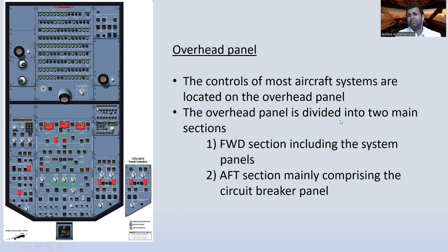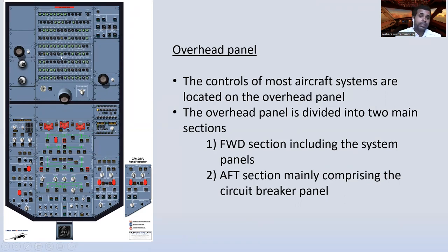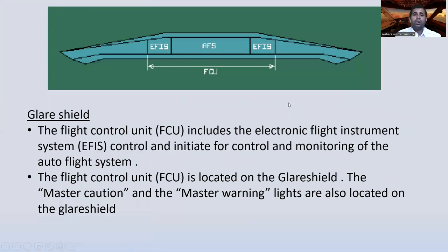The overhead panel is divided into two main sections: the forward section including the system panels, and the aft section mainly comprising circuit breakers.